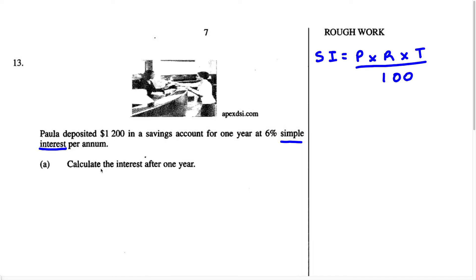Part A says: calculate the interest after one year. Anytime they want you to calculate the interest, we're just going to use the formula. Let's find the principal, rate, and time in this question. Paula deposited $1,200 in a savings account, so the principal is going to be $1,200. We write P equals $1,200.